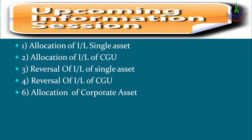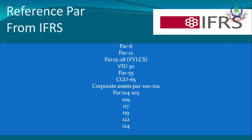In the upcoming session we will look at: allocation of impairment loss for a single asset; allocation of impairment loss for a CGU; reversal of impairment loss for a single asset; reversal of impairment loss for a CGU; and the treatment of corporate asset allocation. Reference paragraphs from IAS 36 to go through: paragraph 6, paragraph 12, paragraphs 25 to 28 (fair value), paragraph 30 (value in use detail).